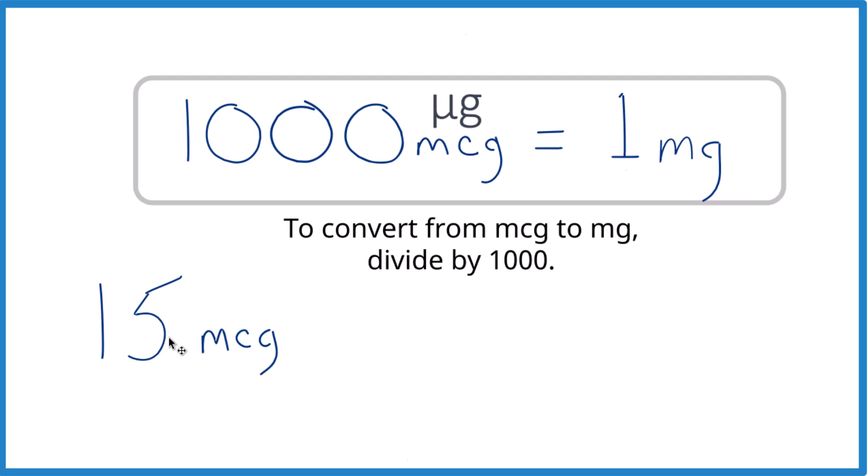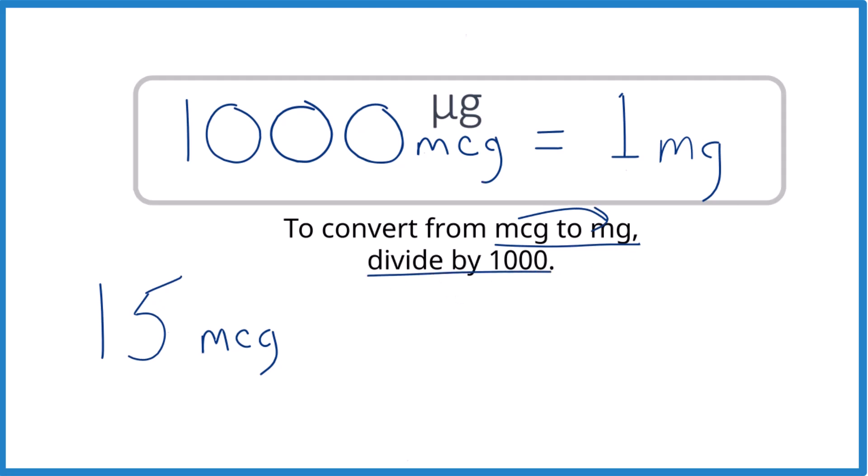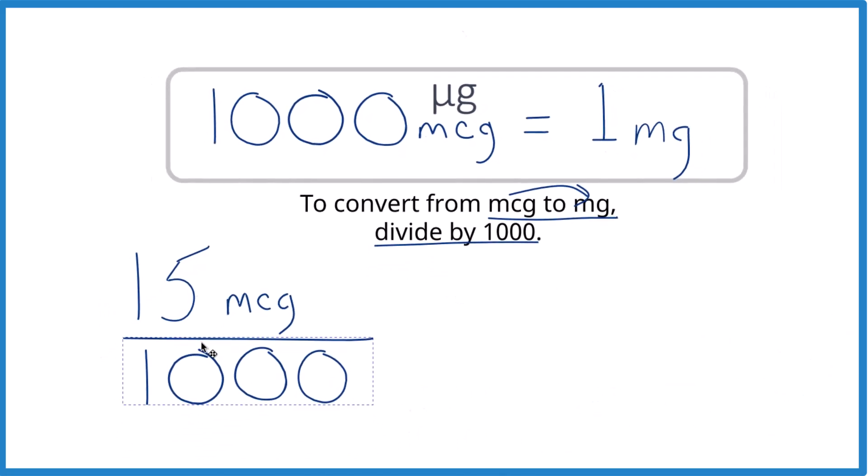So if we're going from our 15 micrograms, we want to get milligrams, we're just going to take and divide by 1,000. So we take 15, divide it by 1,000. But remember, that's 1,000 micrograms per milligram, micrograms per milligram. Those are the units.